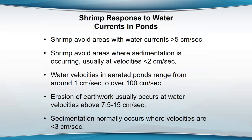Shrimp avoid areas of water currents less than two centimeters per second because of sedimentation, and they avoid areas greater than five centimeters per second because of the current. Water velocities in aerated ponds range from about one centimeter per second to over a hundred centimeters per second in some cases.